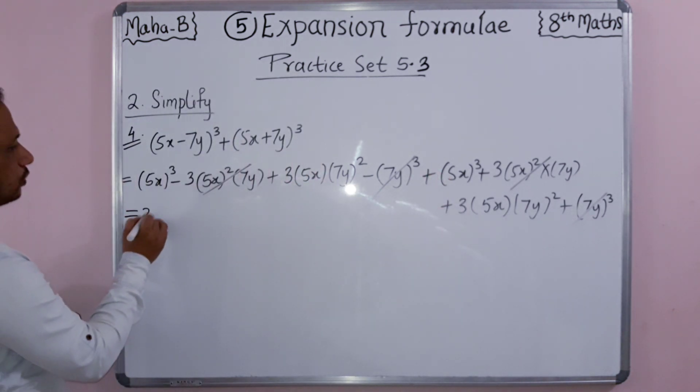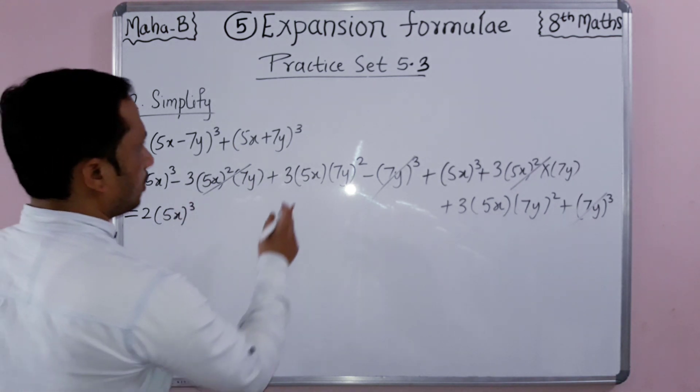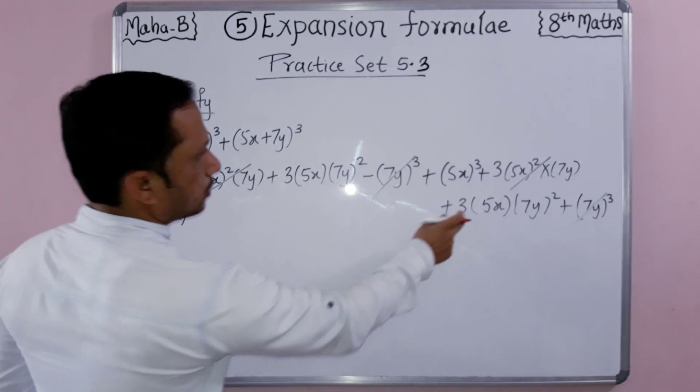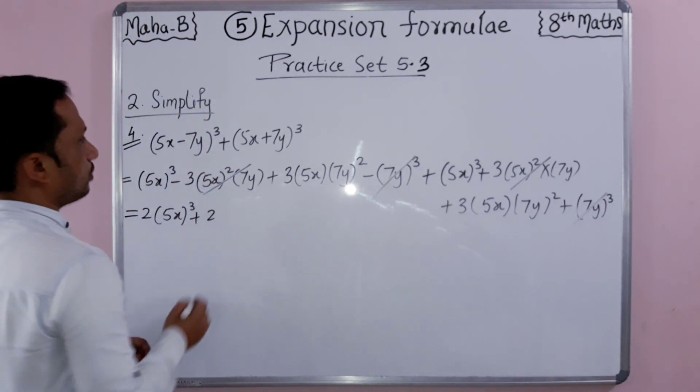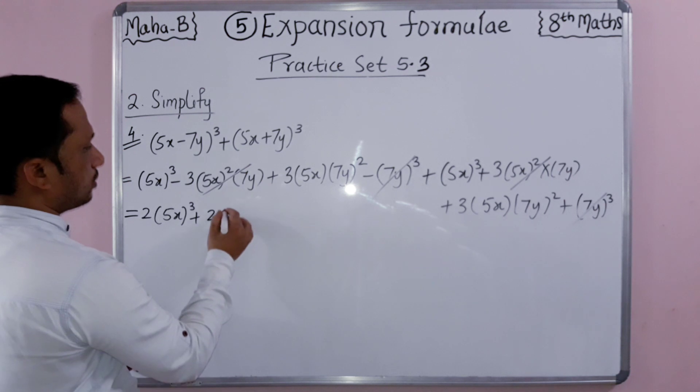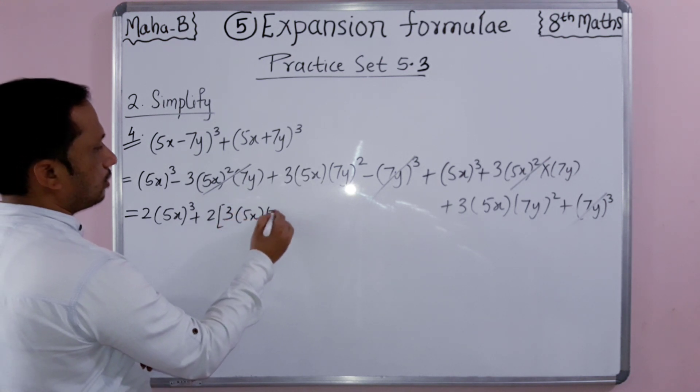So what is this? Two times, so 2×5x³. Students, then this is also two times, plus sign is there. So 5x, two into this one, two into 5x×7y.